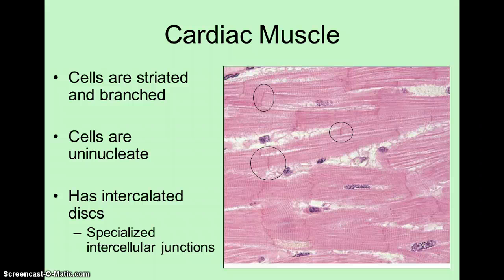To tell skeletal and cardiac muscle apart, I look for what are known as intercalated discs. These structures are present with cardiac muscle but not with skeletal muscle. They are specialized junctions between cardiac muscle cells, and they run perpendicular to the striations. Several of them can be seen in the slide, and I've circled a few to make sure everyone is focused on the right structures. When you see these intercalated discs, you know that you're looking at cardiac muscle. They can sometimes be faint on slides in the lab, so if you're struggling to find them, be sure to let your lab instructor know.